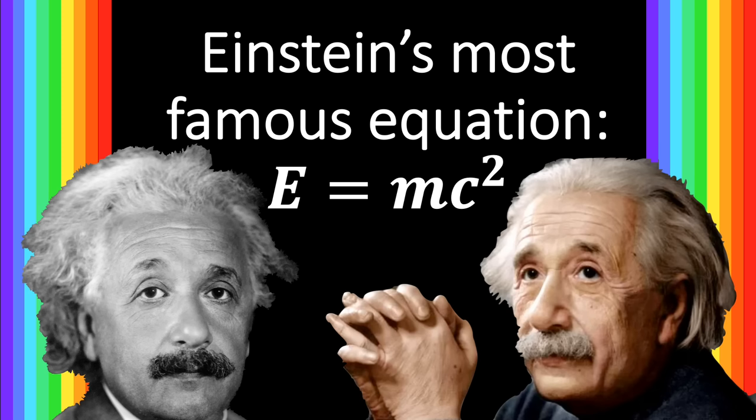The equation E equals mc² is perhaps the most famous equation in all of physics, but very few people actually know what the equation means or where it comes from. In this video, I would like to show one method for deriving this equation, as well as provide some insight into what the equation actually means. Along the way, we will also touch upon some of the most fascinating features of Einstein's theory of special relativity.